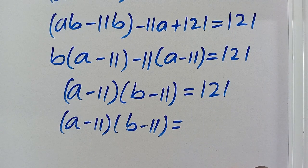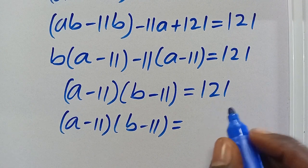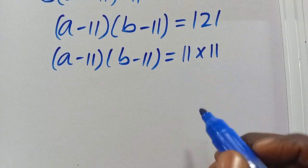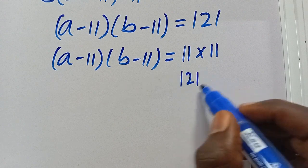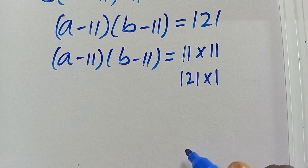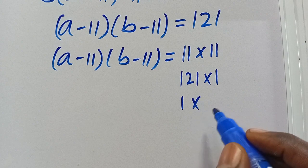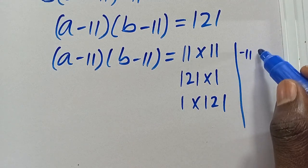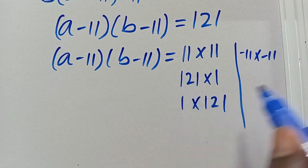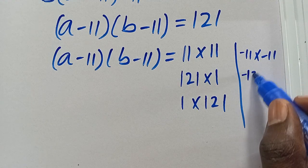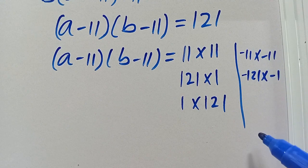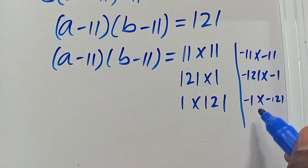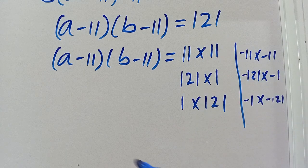Now 121 can be factored in several ways: as 11 times 11, as 121 times 1, or with negatives as minus 11 times minus 11, minus 121 times minus 1, or minus 1 times minus 121. All of these products equal 121, so let's work through each case.